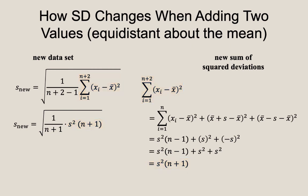The numerator is just the sum n plus 1 times s squared, and the denominator is n plus 1. Cancelling and taking the square root, we see that the standard deviation is still just s. It remains unchanged.